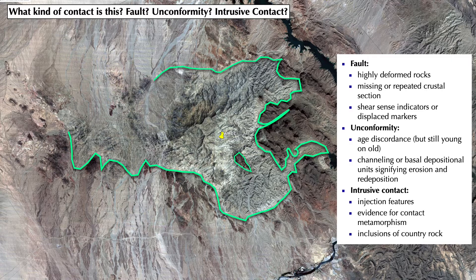Hopefully that answers the questions I posed in the exercise. In the next video segment, we'll discuss all of these features of the Whipple Mountains in more detail. As a preview, we'll find abundant evidence that this contact is indeed a very special kind of normal fault that's part of a much larger metamorphic core complex, which we'll define in detail in the next segment.